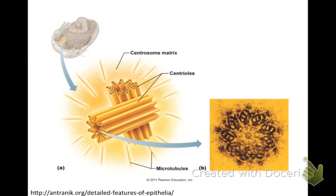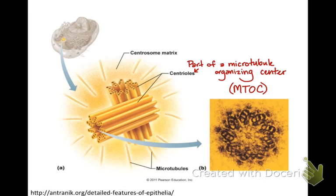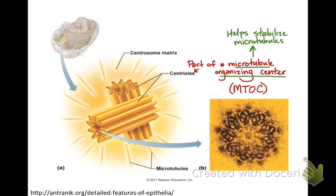Centrioles, which we'll talk about in a little bit, are examples of microtubule organizing centers, or MTOCs. These stabilize the microtubules, because without stabilization they would just be breaking down and reforming constantly and wouldn't be organized or helpful. Microtubules can also fuse together into doubles and triples, much like gluing a bunch of straws together. Centrioles are a good example of triple-fused microtubule units.